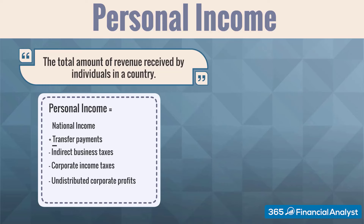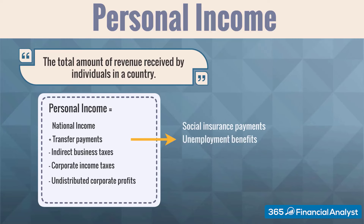Please pay attention that the transfer payments are included with a positive sign. That is not an error — we need to use the plus sign here. Personal income includes the transfer payments paid by the government, such as social insurance payments, unemployment benefits, and disability payments. Let's denote these with F. They are not considered as national income and are not included in the national income figure, which is why we need to add them here.